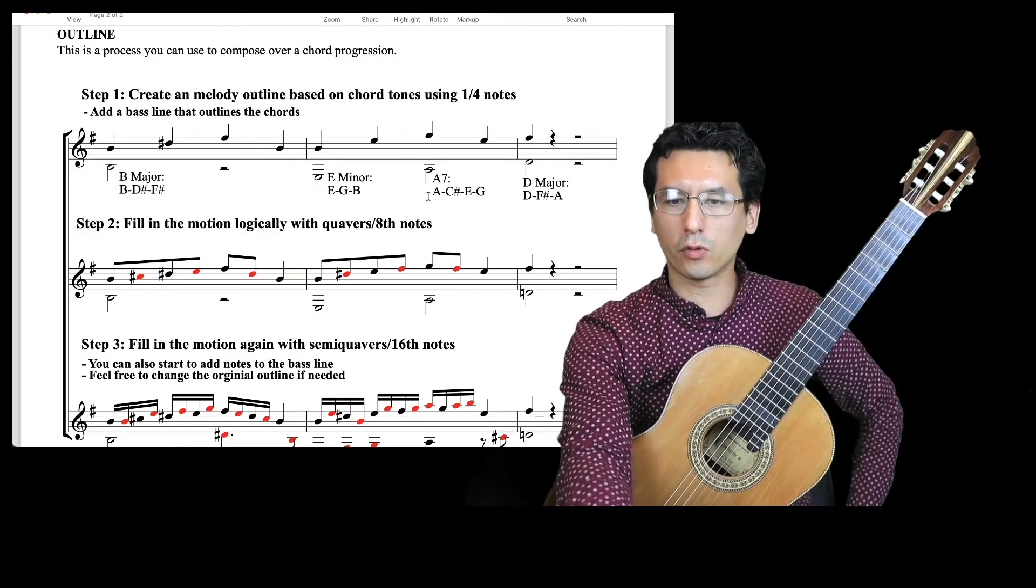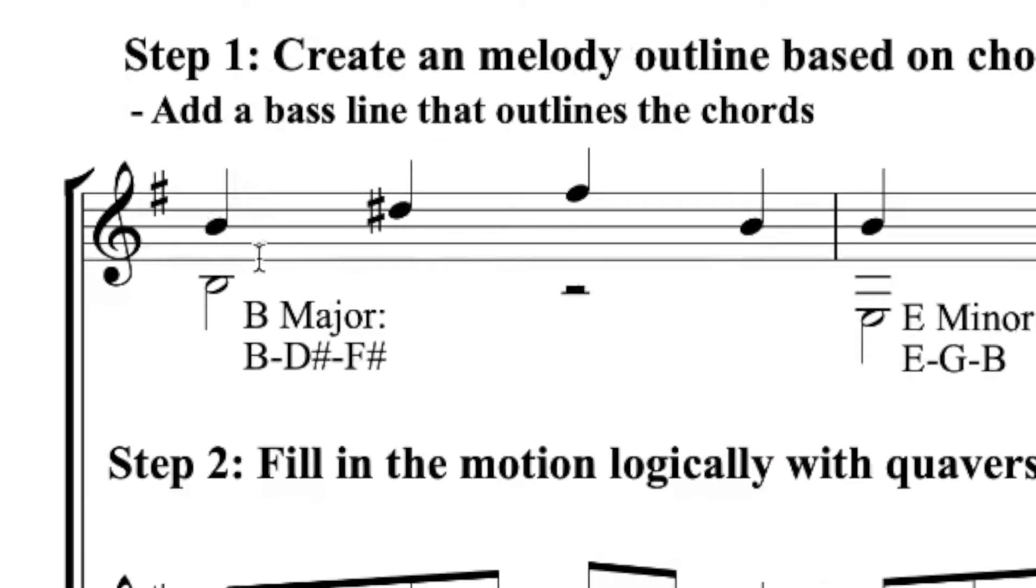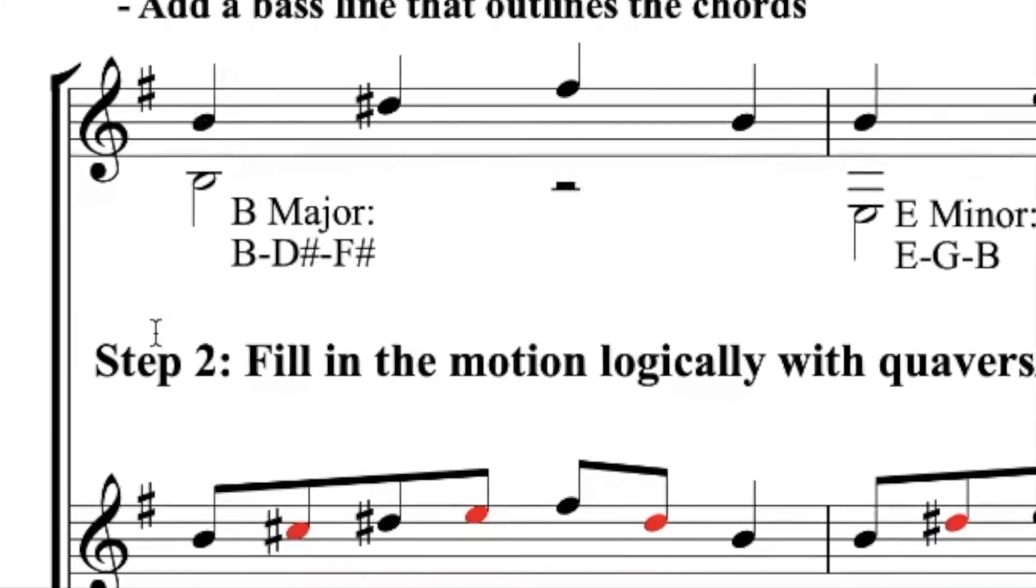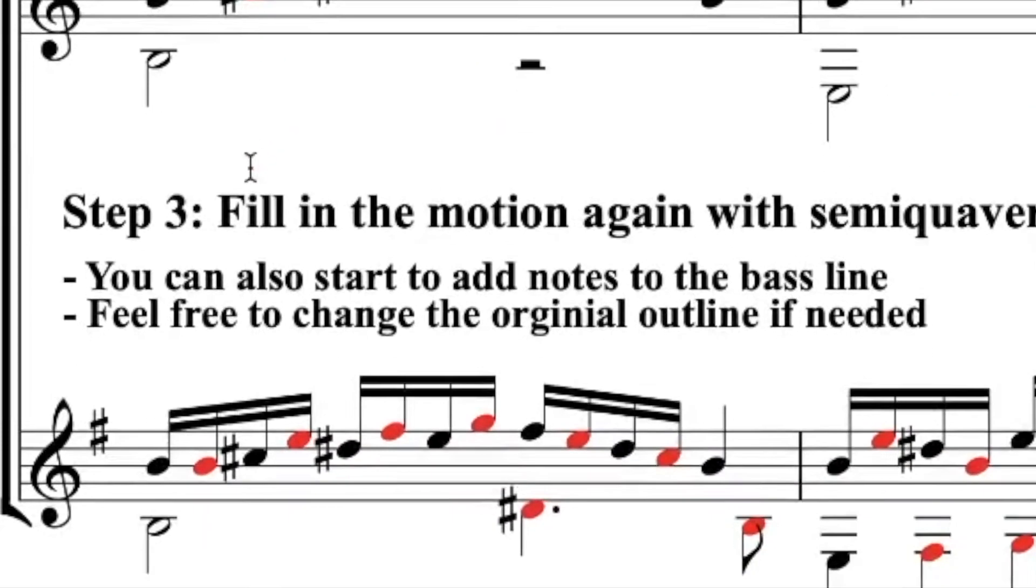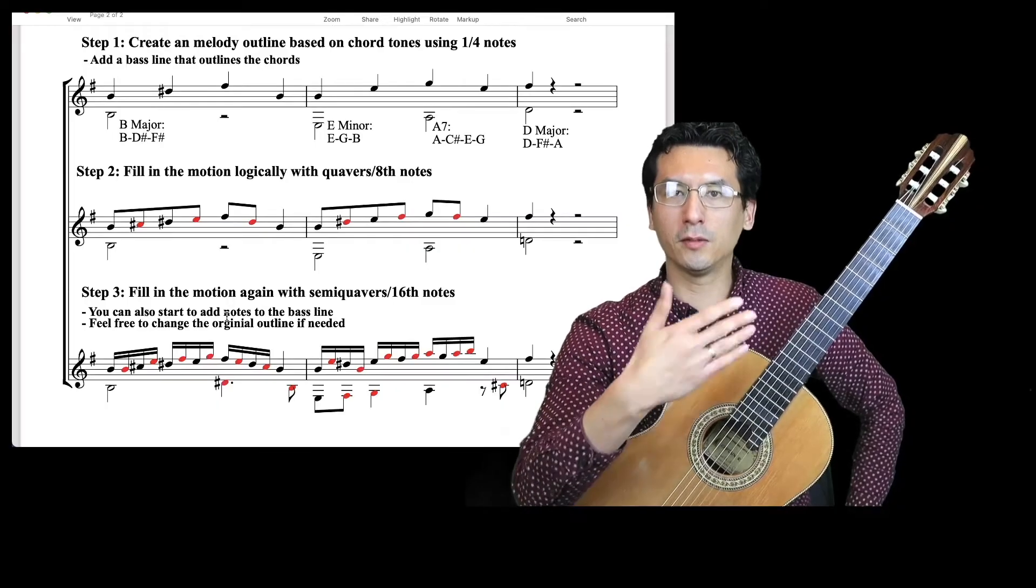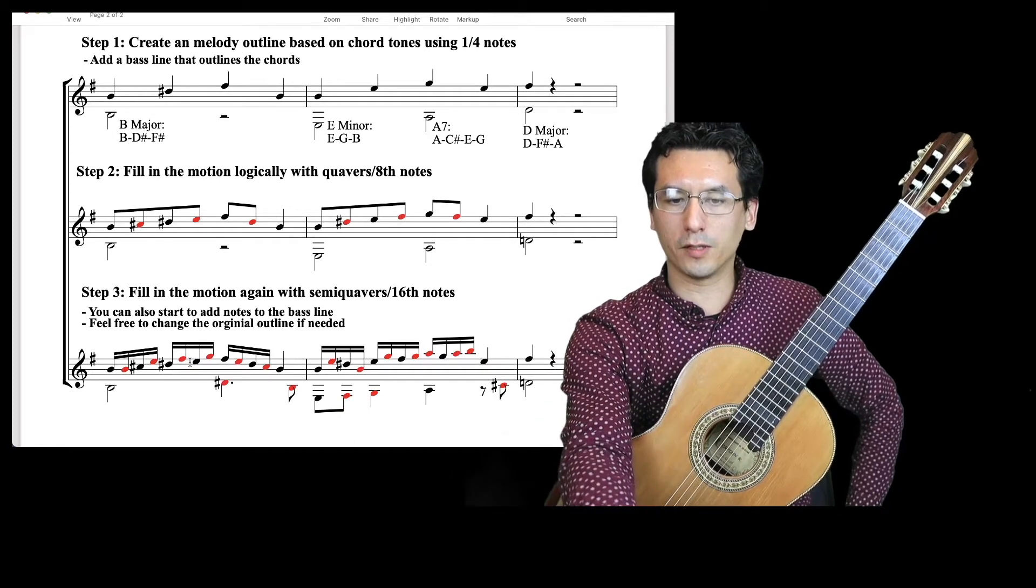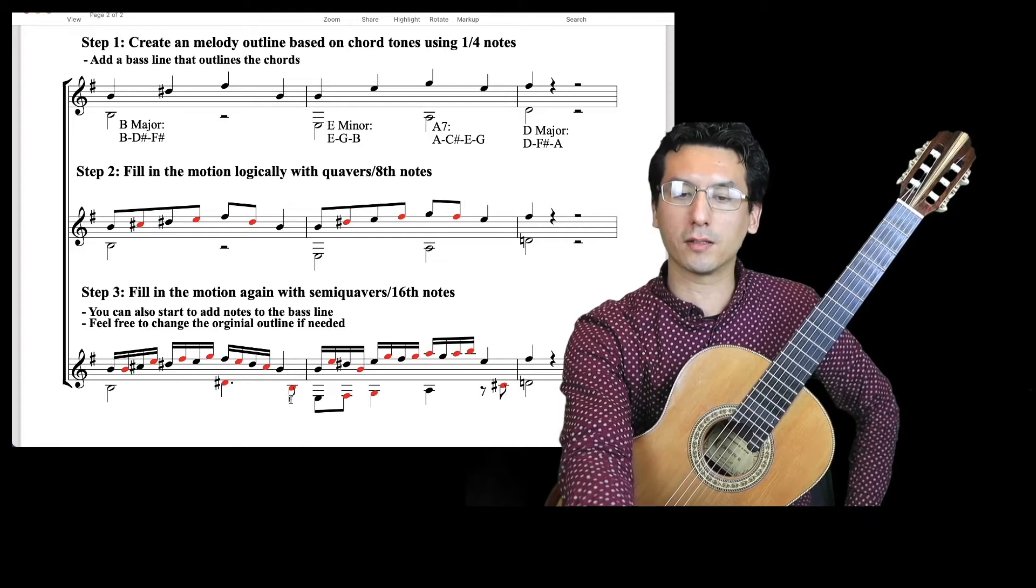So I've taken those four chords and we've created an outline here. And then the next step we do is we fill in the outline here. And the final step is we fill it in again. And this is how we end up with this kind of flowing rhythm in the melody part and a little bit of activity in the bass as well to support that.